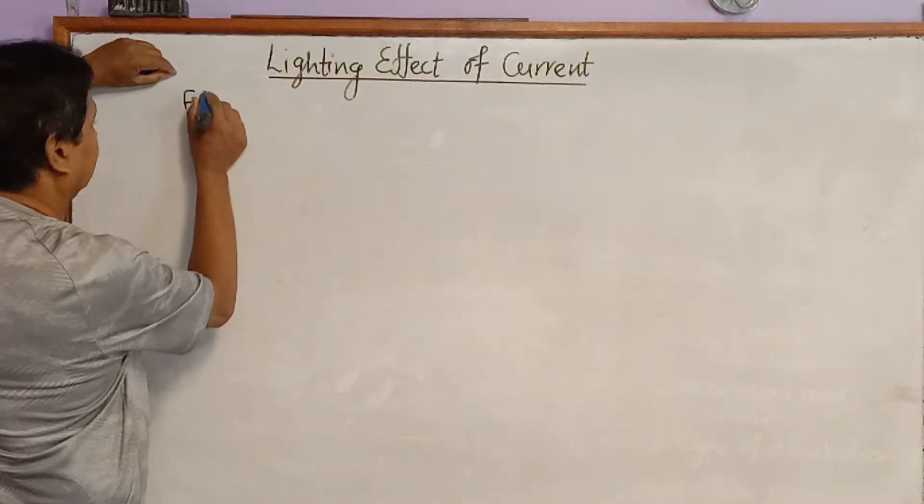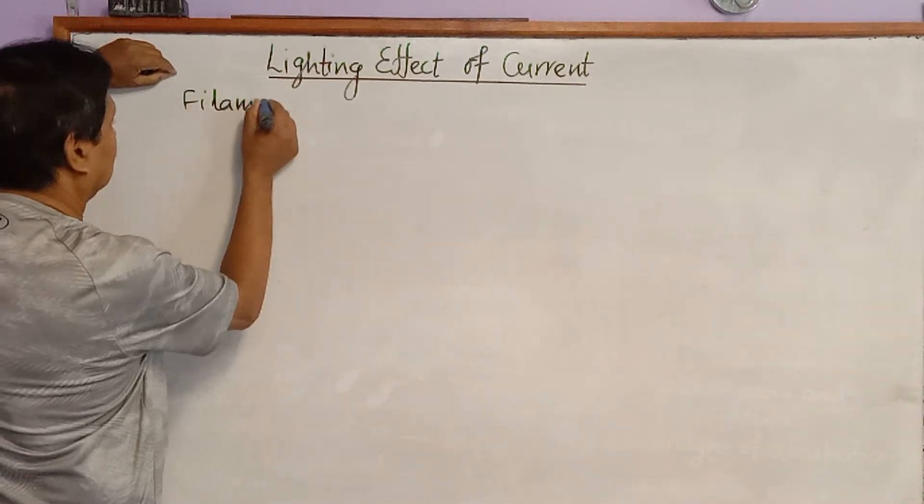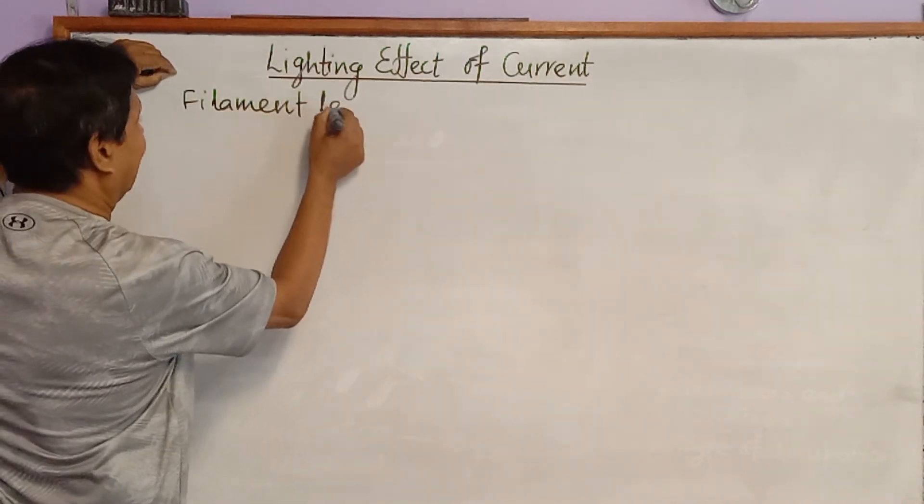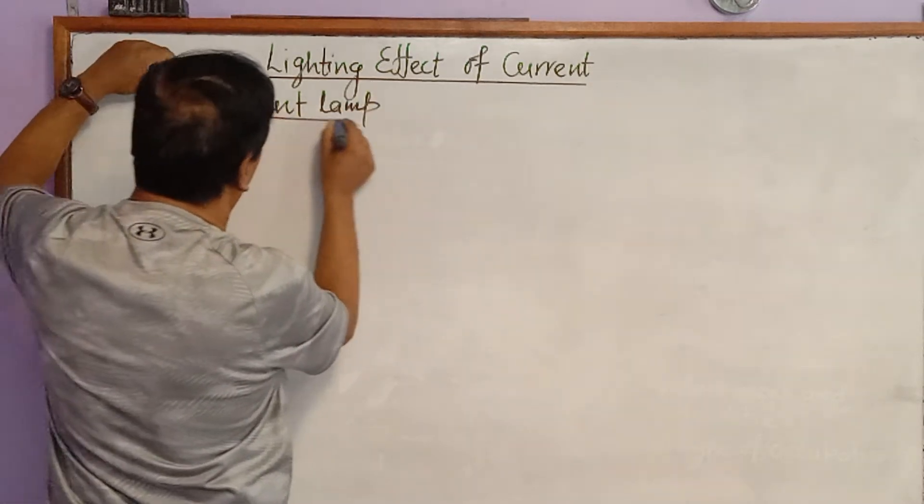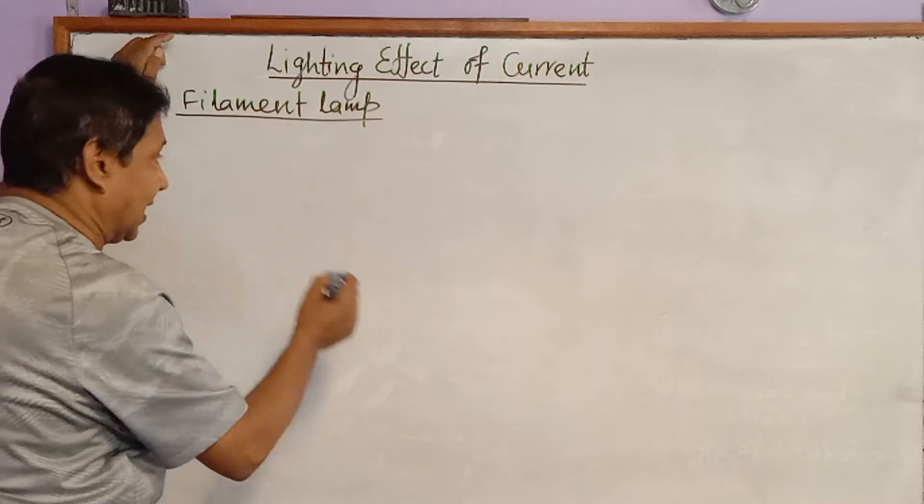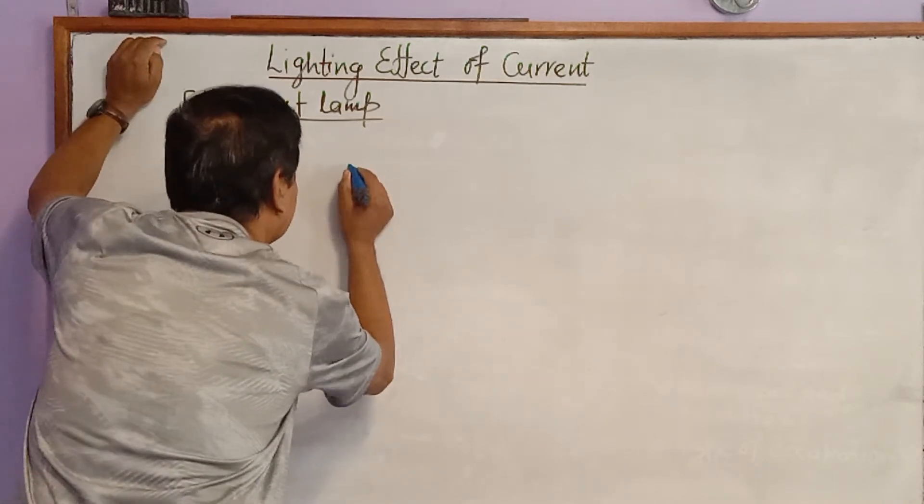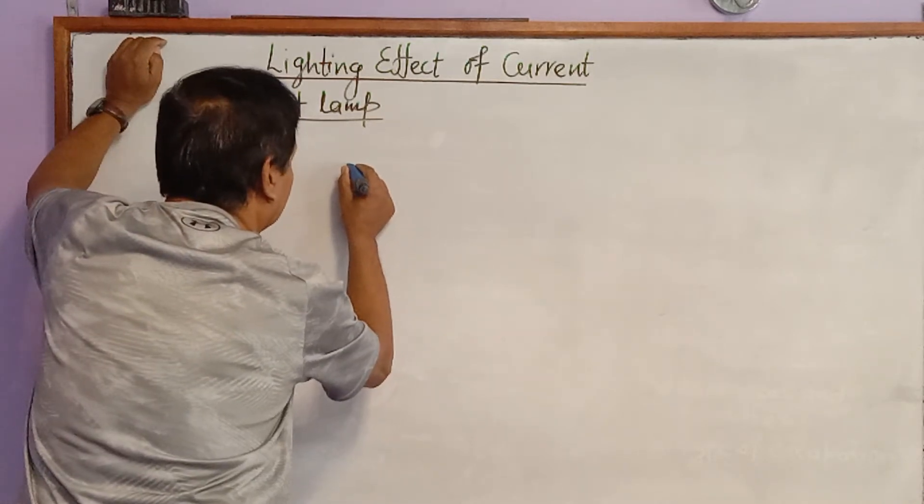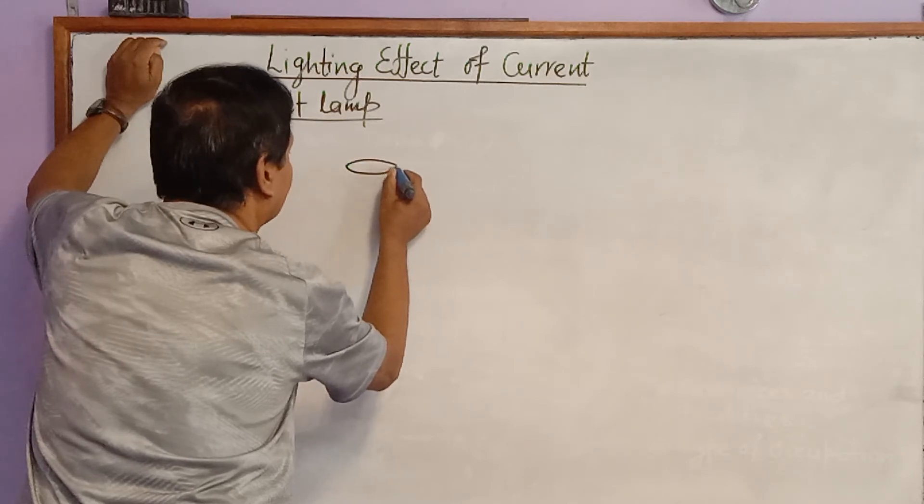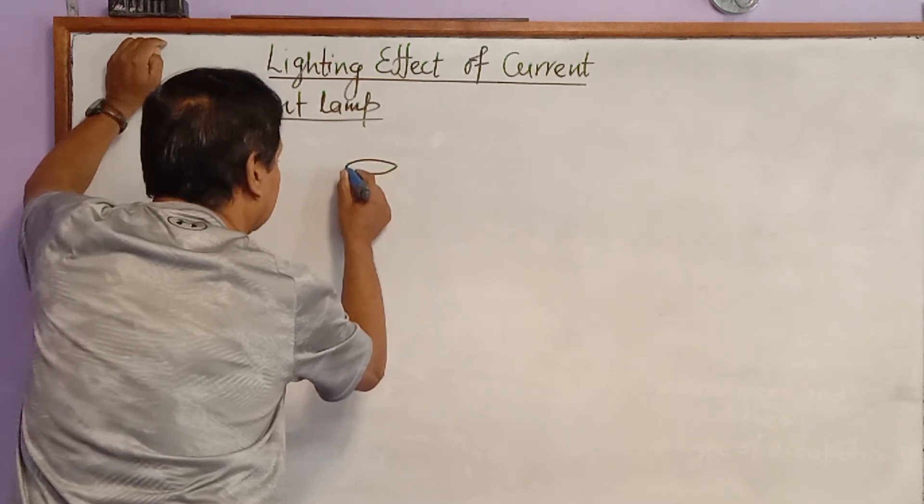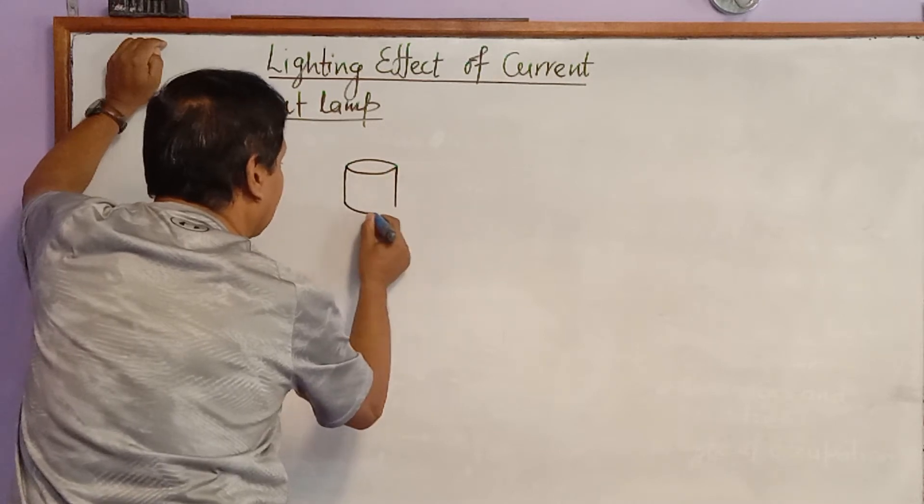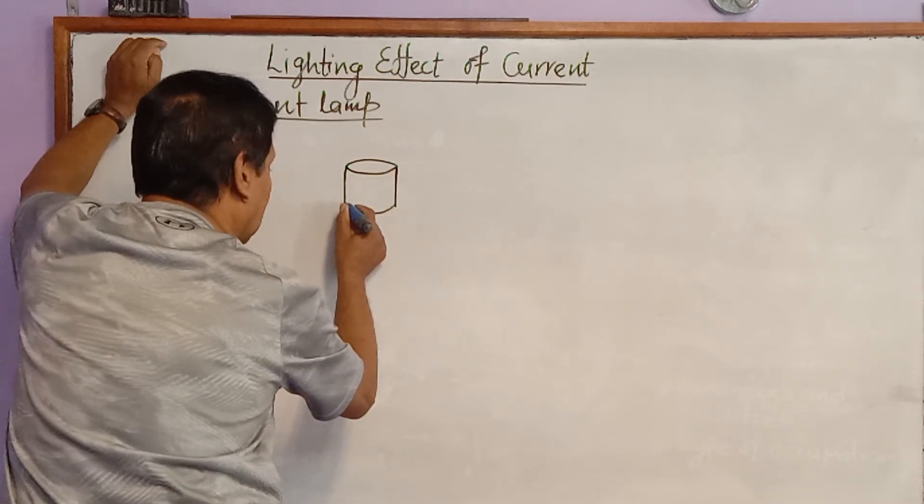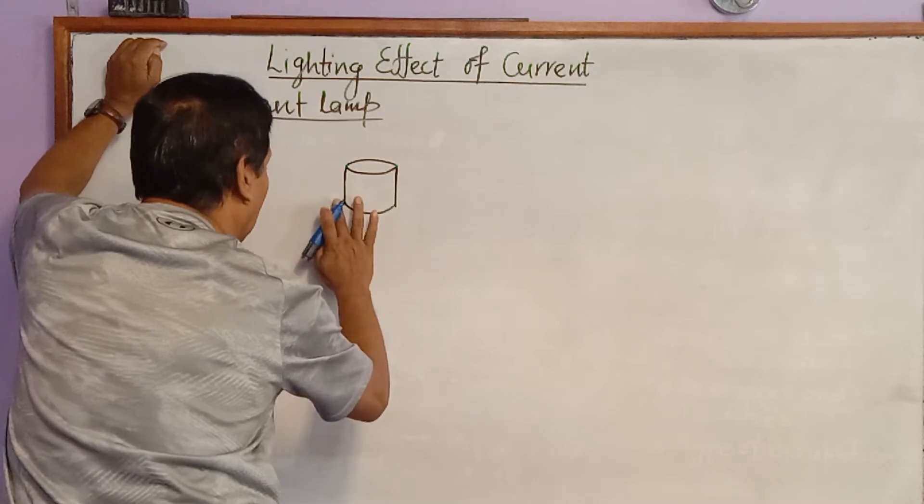This filament lamp. Now we have to understand first the construction of filament lamp, how it is constructed. I'm going to draw the diagram of filament lamp. This is the upper part of filament lamp which is made up of metal.